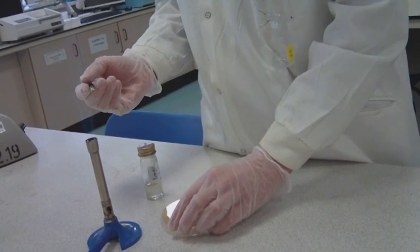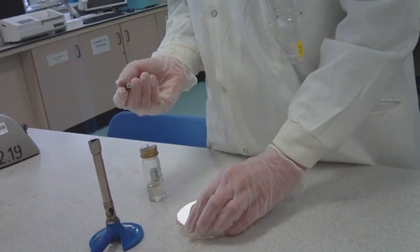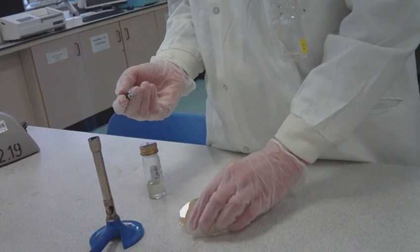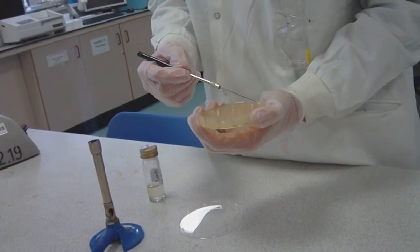Flame the loop and cool it for five seconds. You can touch an unused part of the agar surface close to the edge of the plate to ensure the loop has cooled.